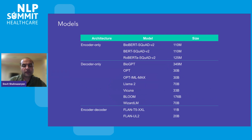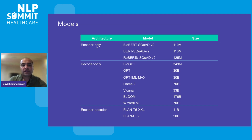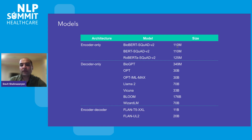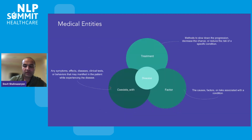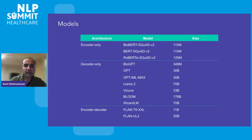The models used in the paper — there are 12 models we experimented with for relation extraction from EMR notes, covering various architectures. We used encoder-only, decoder-only, and encoder-decoder architectures of various sizes, with different numbers of parameters ranging from 120 million to 70 billion parameters. You can see here the names of the models that were utilized for the experiments.